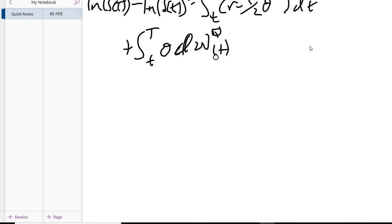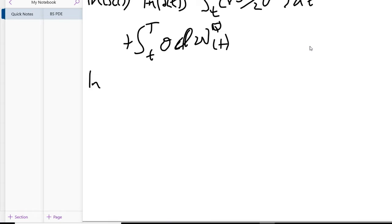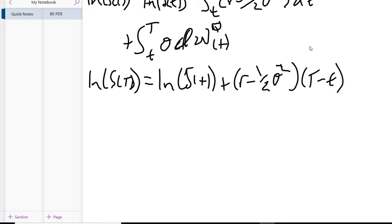Simplifying this and solving these integrals, I mean luckily they're extremely obvious. We're going to have that ln(S(T)) equals ln(S(t)) plus (r - (1/2)σ²)(T-t) plus σ(W_Q(T) - W_Q(t)). Obviously we still have a clear issue here - we don't want the log of S(T), we simply want S(T).